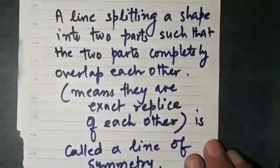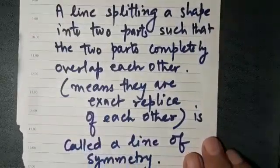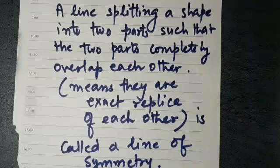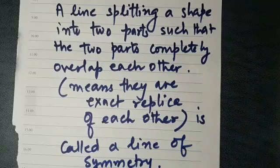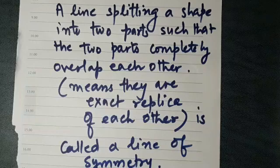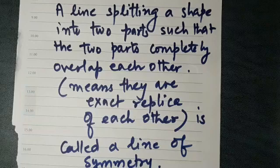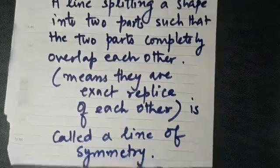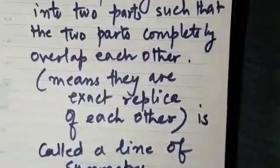So how many lines of symmetry are there in a circle? It will be infinite — we have infinite lines of symmetry in a circle. So I am recalling the definition — you can write it down. What is a line of symmetry? A line which splits a shape into two parts such that the two parts completely overlap each other, meaning they are exact replicas of each other, is called a line of symmetry. And such shapes are called symmetrical.